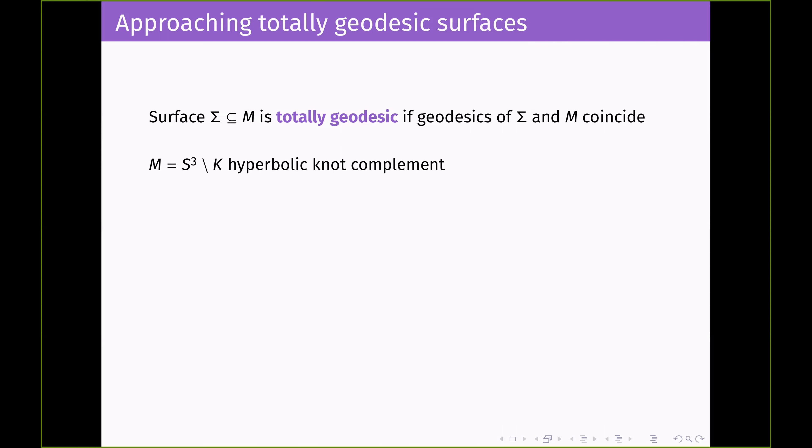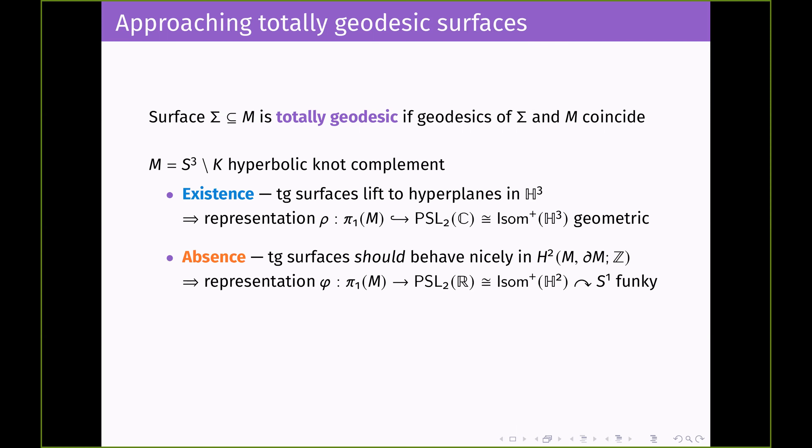Today we're going to be looking in particular at a manifold that is a hyperbolic knot complement. There are two ways we're going to be looking at these totally geodesic surfaces. One way is if we're looking at the existence of them — we're going to be lifting to hyperplanes in the universal cover and use the representation, the normal geometric one, where you take your fundamental group into PSL(2,ℂ) and that acts on hyperbolic three-space by isometry. For absence, though, we're going to be looking at its behavior in the second cohomology group rel boundary with integer coefficients.